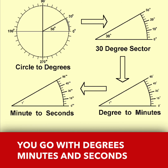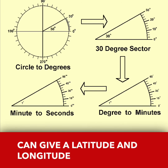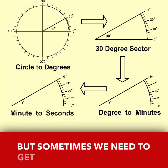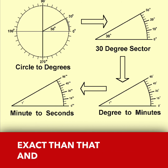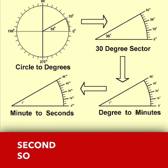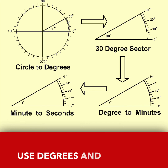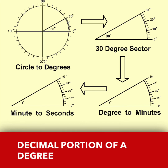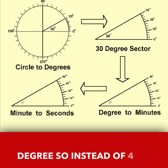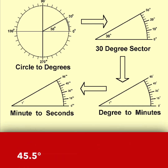That's one way to give a latitude and longitude. Sometimes you need to be even more exact, so you go to decimal portions of a degree. Many people will just use degrees and a decimal — so instead of 45 degrees 30 minutes, they'll just say 45.5 degrees, and that's perfectly fine.